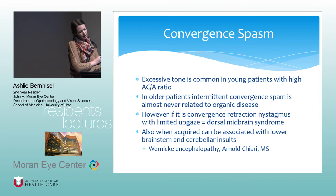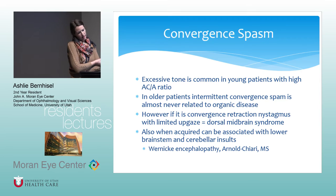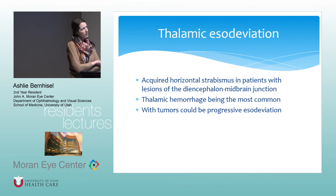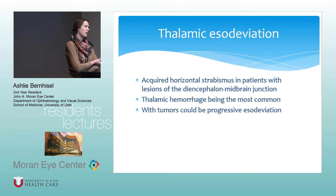Convergence spasm — in older patients it's almost never related to organic disease, but it can be associated with dorsal midbrain syndrome. When acquired, it can be associated with lower brainstem and cerebellar insults. Thalamic esodeviation is usually associated with a thalamic hemorrhage and causes a horizontal strabismus.